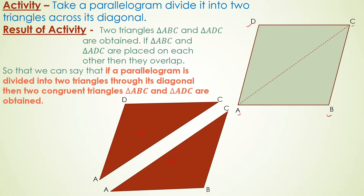So we can say that if a parallelogram is divided into two triangles through its diagonal, then two congruent triangles — triangle ABC and triangle ADC — are obtained. In other words, if we cut a parallelogram across one of its diagonals, the two triangles obtained will be congruent.